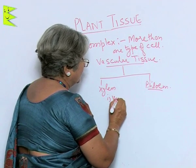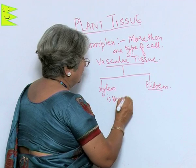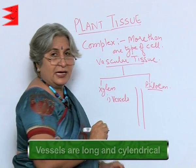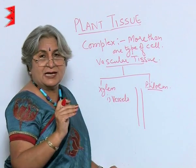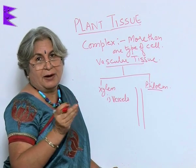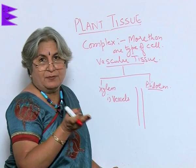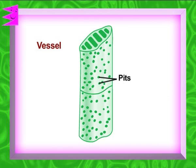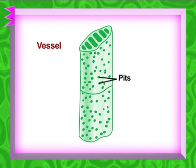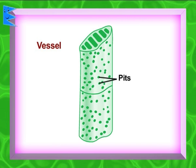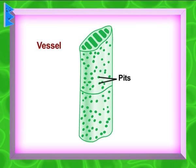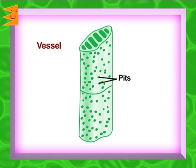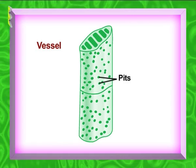First is vessels. Vessels are long and cylindrical. Vessels are made up of many cells but the cell plates dissolve. Imagine cells lying one above the other with their cell plates dissolved — it becomes a continuous passage, and that is what vessels are.